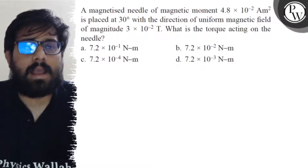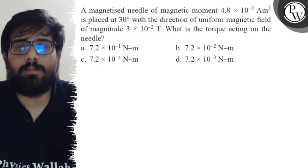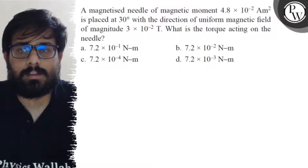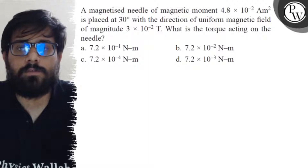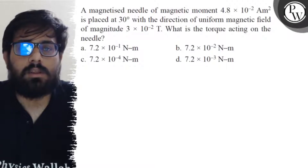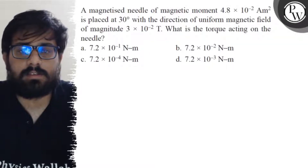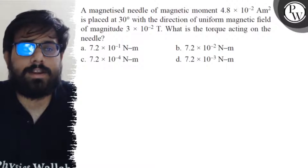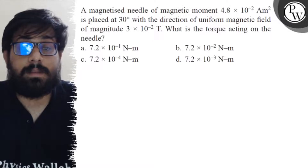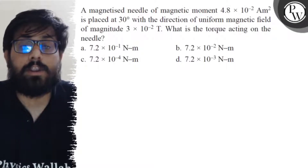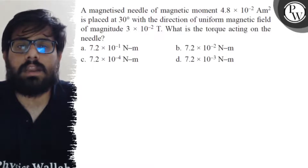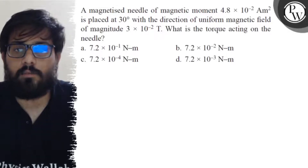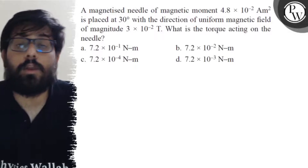Hello students, let's see the question. A magnetized needle of magnetic moment 4.8 × 10⁻² ampere meter square is placed at 30 degrees with the direction of a uniform magnetic field of magnitude 3 × 10⁻² tesla. What is the torque acting on the needle? The options are: 7.2 × 10⁻¹ N·m, 7.2 × 10⁻² N·m, 7.2 × 10⁻⁴ N·m, and 7.2 × 10⁻³ N·m.